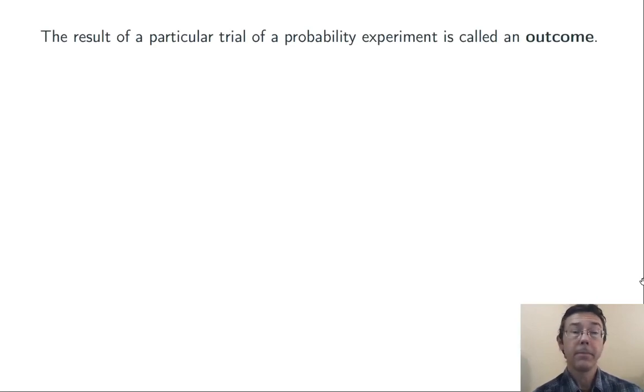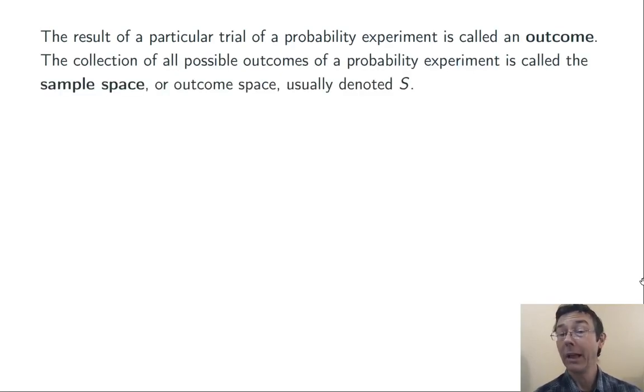A little bit more vocabulary. The result of a particular trial of a probability experiment is called the outcome. The collection of all possible outcomes of a probability experiment is called the sample space, or outcome space, usually denoted with a capital S. And a subset of the sample space is called an event.